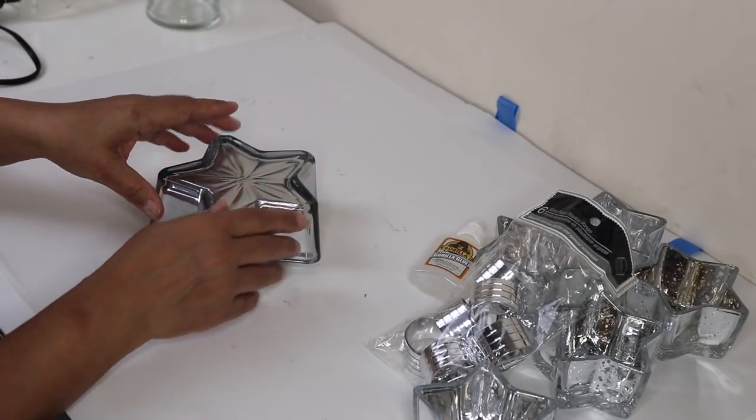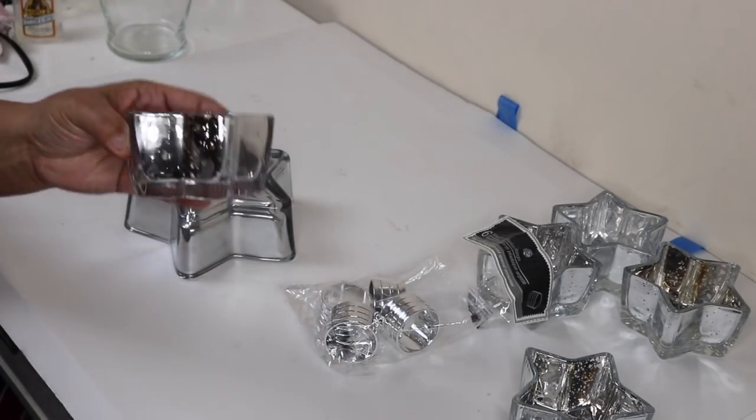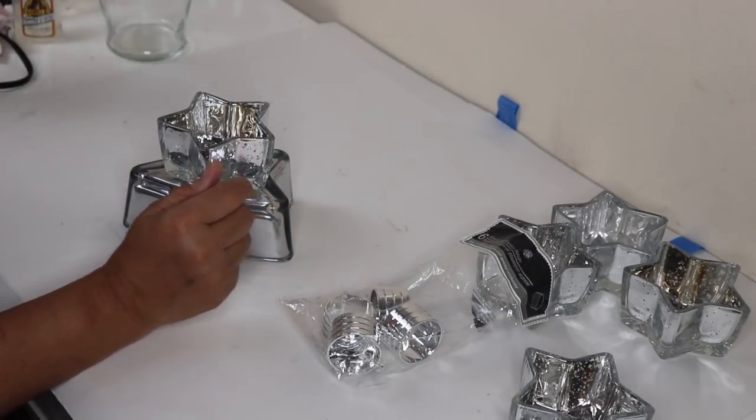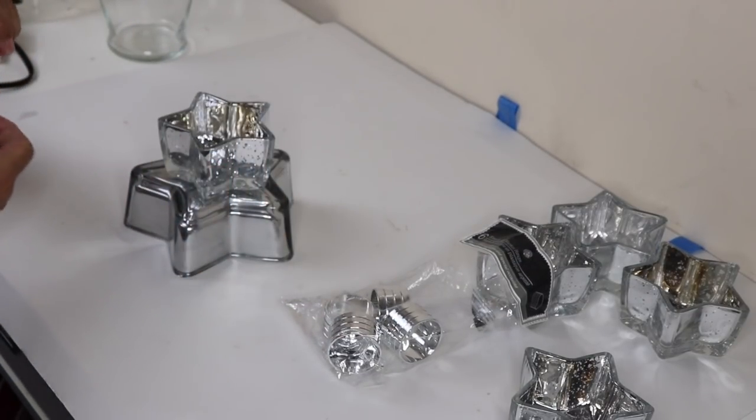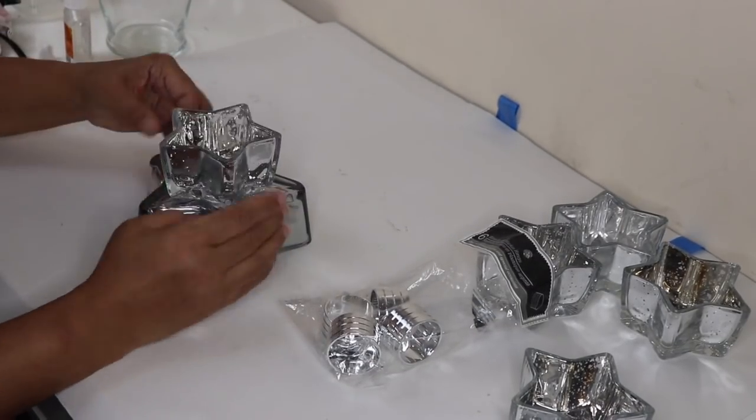Let's get started. Flip your bowl upside down, take one of your star shaped tea light holders, place it on top of your bowl just to get an idea where it needs to go. Take your glue and spread it along the edge of your tea light holder, place it back on top of your bowl and allow it to dry.